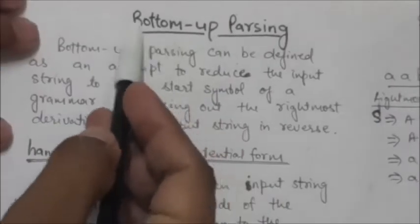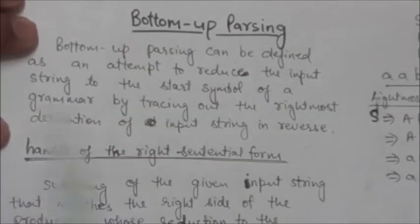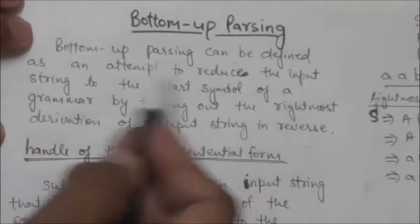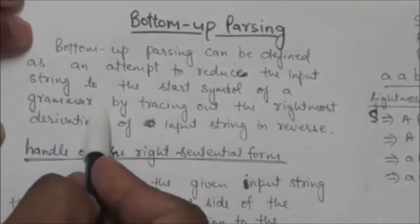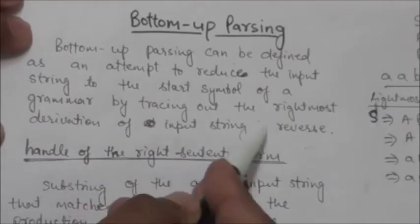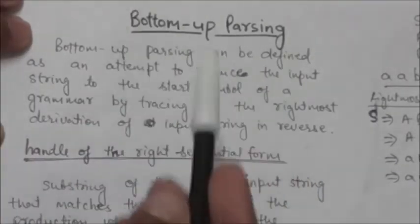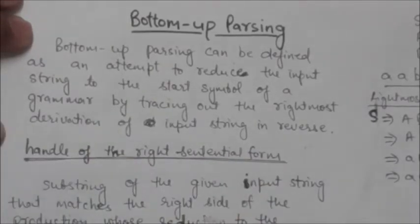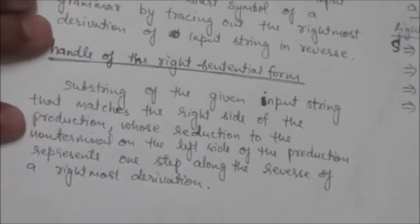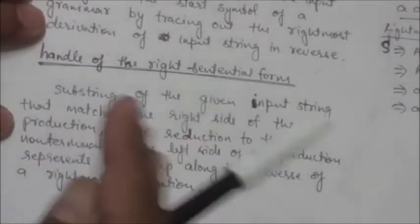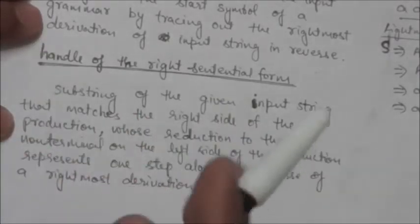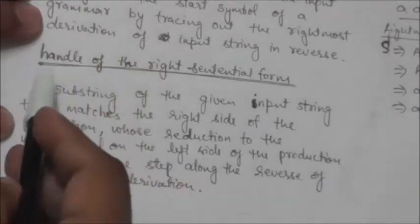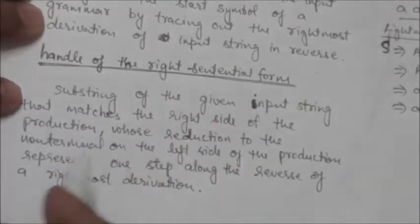Hello friends, welcome back. In this tutorial we will study bottom-up parsing. Bottom-up parsing can be defined as an attempt to reduce the input string to the start symbol of a grammar by tracing out the rightmost derivation of the input string in reverse. To understand how this is performed, we must be familiar with the term 'handle of the right sentential form.'